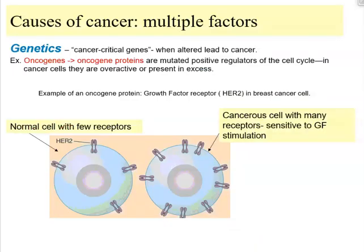Genetics play a large role in whether an individual develops cancer. These are called cancer-critical genes — when altered or mutated, they can lead to a cancerous cell. We have oncogenes that code for oncoproteins. Typically these proteins are positive regulators of the cell cycle, but when they are overexpressed, they speed up the division process.